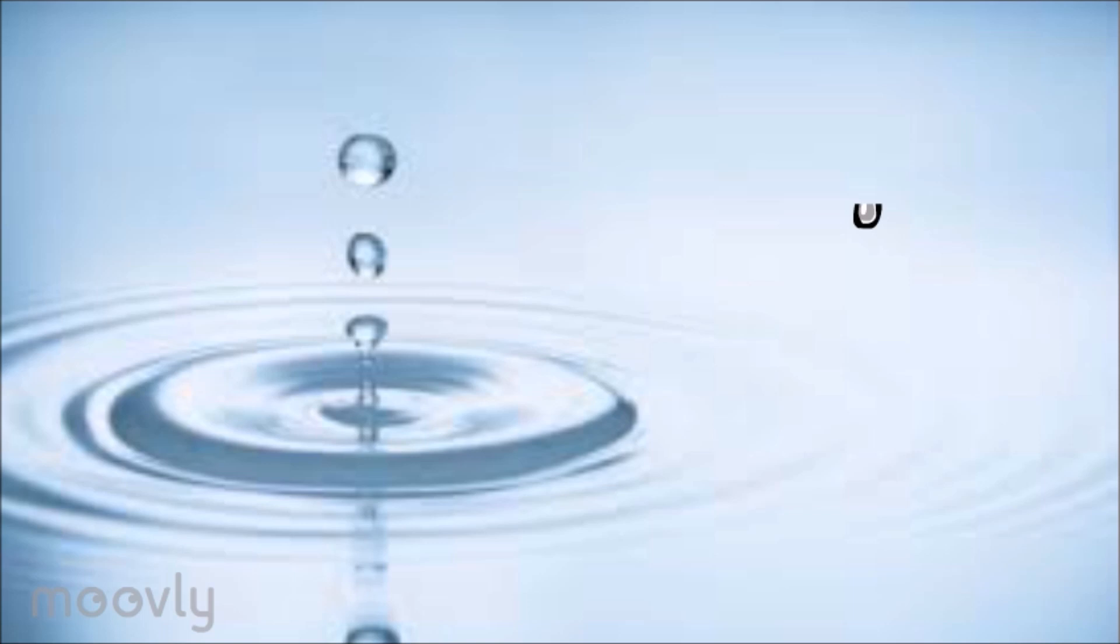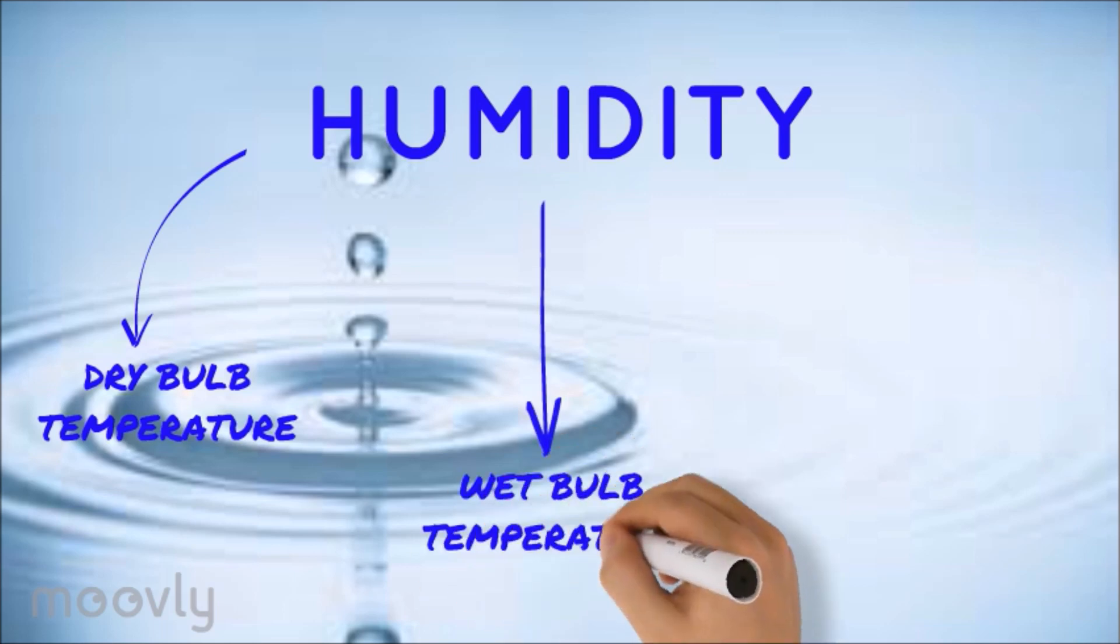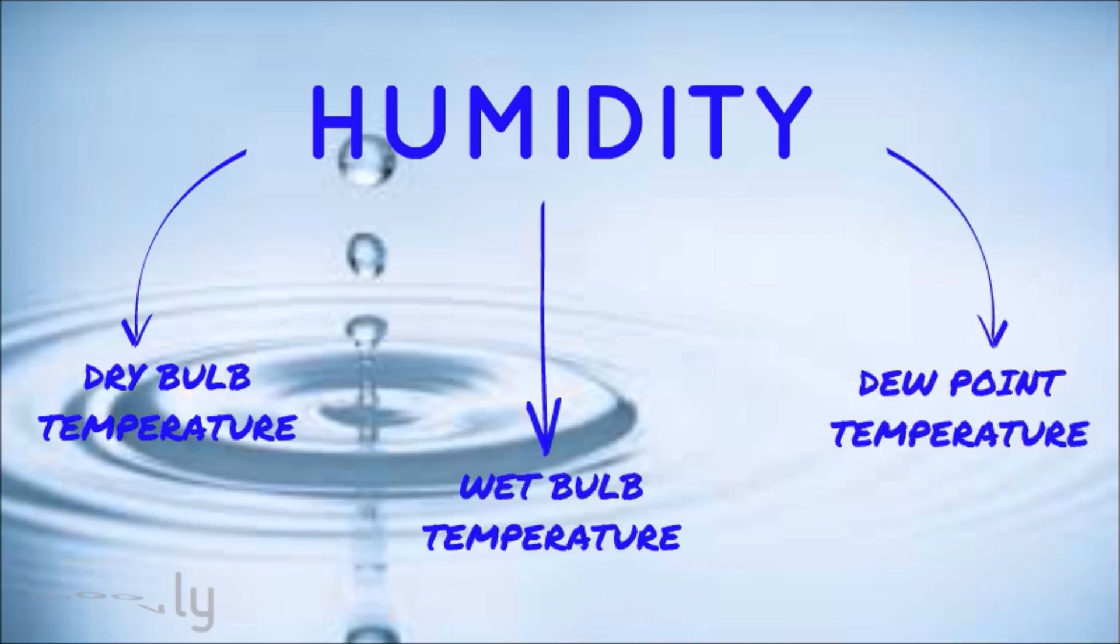Thus, for conclusion, humidity can relate to three temperature properties: dry bulb temperature, wet bulb temperature and dew point temperature, where the wet bulb temperature and dew point temperature is increased with increment of moisture content in air water system.